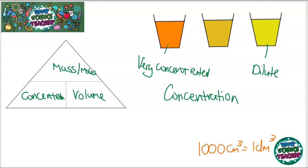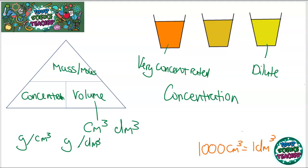It's important to remember converting between centimetres cubed and decimetres cubed, because volume can be represented either way. There are a few units you can represent concentration in: grams per centimetre cubed, grams per decimetre cubed, moles per centimetre cubed, or moles per decimetre cubed.